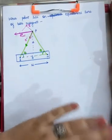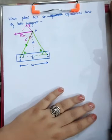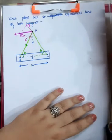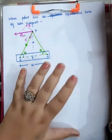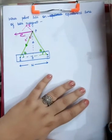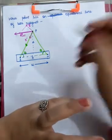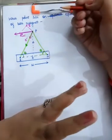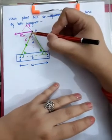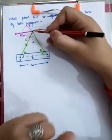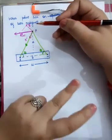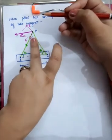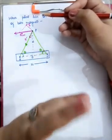In this video we are going to study the magnetic field strength due to a bar magnet at a point which lies on the equatorial line of the bar magnet. Suppose you have a bar magnet — this is the axial line and this is the equatorial line. Now if you have some point over the equatorial line and you want to find out the magnetic field strength due to this bar magnet at that point, how are you going to proceed?